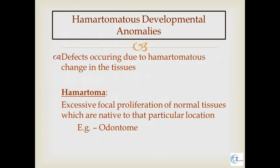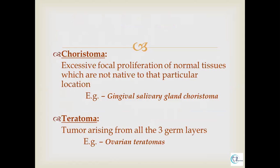The next type is hamartomatous anomaly, in which the defect occurs because of hamartomatous proliferation. A hamartoma is a non-neoplastic proliferation of tissue that resembles its parent tissue — it is a non-neoplastic excessive proliferation of normal tissue, and it is native to that location. For example, odontome is a hamartomatous proliferation of the tooth-forming apparatus. Another term is choristoma, in which there is proliferation of tissue but it is not native to that location — that falls under the category of choristoma, whereas hamartoma is native to that particular location.